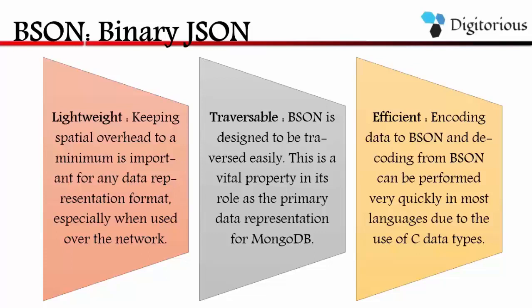BSON is designed to be efficient in space, but in many cases is not much more efficient than JSON. In some cases, BSON uses even more space than JSON. The reason for this is another of the BSON design goals, that is traversability.